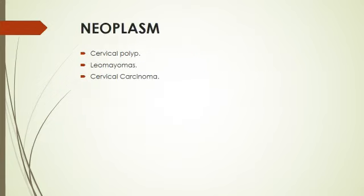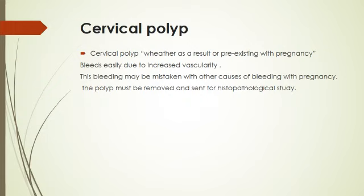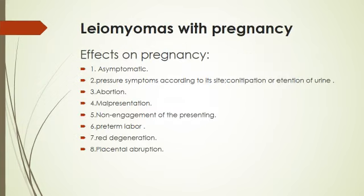Neoplasms during pregnancy: common neoplasms include cervical polyps, leiomyomas, and cervical carcinoma. Cervical polyps, whether arising as a result of pregnancy or pre-existing, bleed easily due to increased vasculature during pregnancy. The bleeding may be confused with other causes of antepartum bleeding. The polyp must be removed and sent for pathological examination.